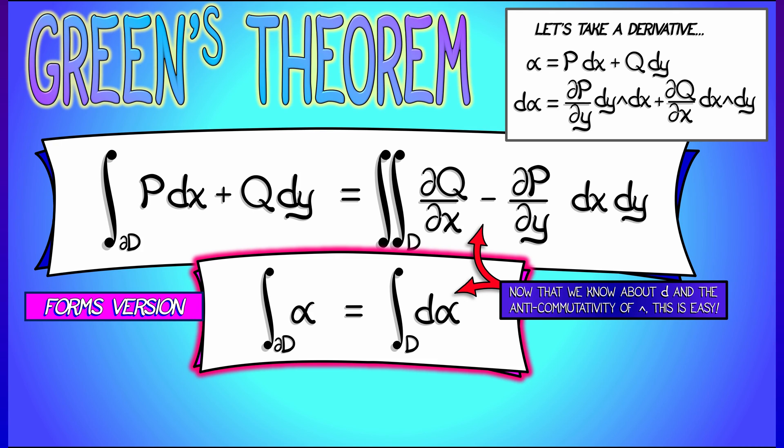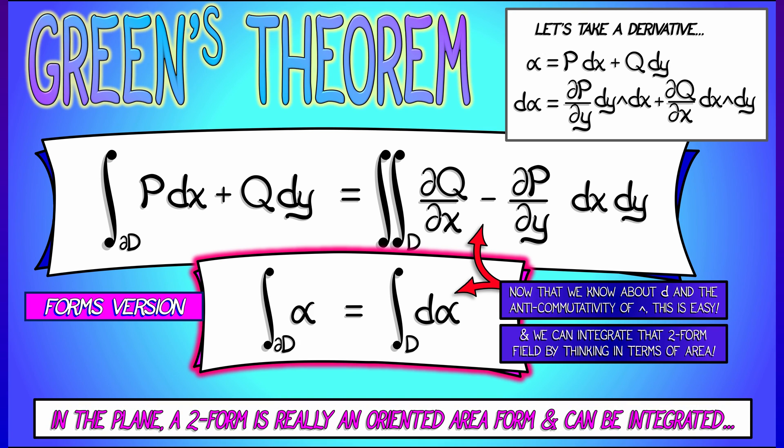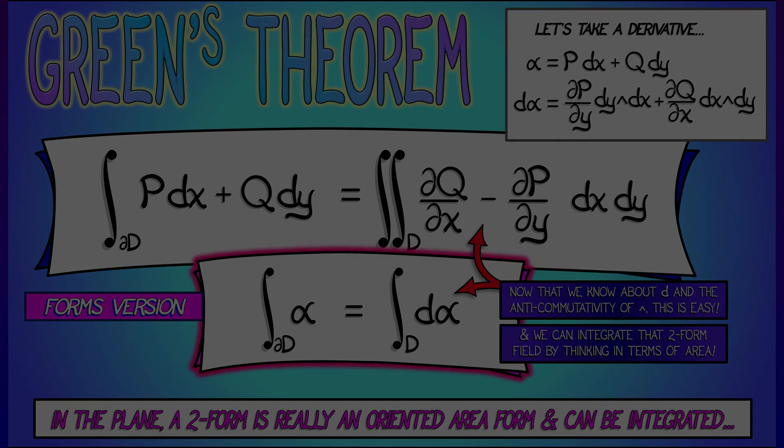Now that we know about how to differentiate forms, now that we know about the wedge product and its anti-commutativity, this is really clear. This simplifies the complicated notation of Green's theorem into a much more elegant equation. You might find this helpful for remembering Green's theorem. We're definitely going to find it helpful for interpreting it and its generalizations. Here's what it is. Let's go.